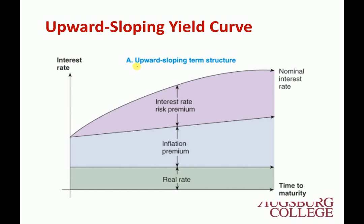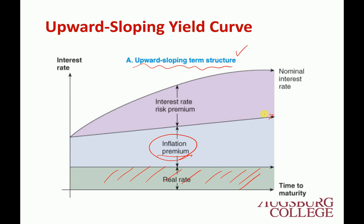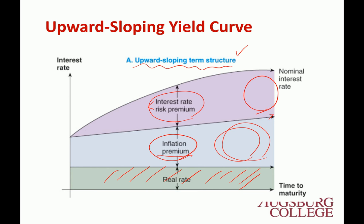The upward-sloping term structure is the normal case. There is a real rate — we require a certain return. There is also an inflation premium, meaning we expect inflation to increase, so we require a higher inflation premium for longer-term bonds. Then there is the interest rate risk premium — interest rate risk is higher for longer bonds, so price risk is higher than reinvestment rate risk. Long-term bonds bear higher interest rate risk, so this premium is larger for long-term. You can see the upward-sloping term structure in normal times.